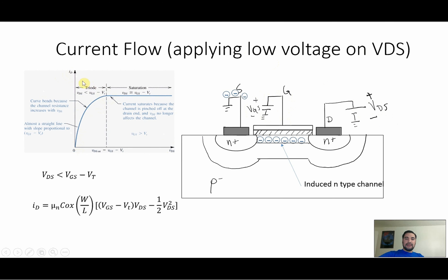If we compare ID versus VDS, we're going to have a straight line, but it bends because the channel resistance increases with VDS. You're going to be in the triode region when your VDS is less than VGS minus VT, because there's a voltage drop right here. In order to find the current, this is the equation: μₙCₒₓ · (W/L) · [(VGS − VT)·VDS − ½VDS²]. This is going to be given by the manufacturer or whoever designed the transistor. VGS is the voltage difference between those two points.